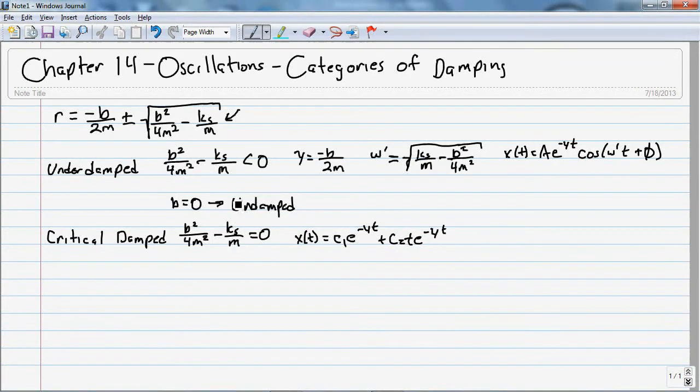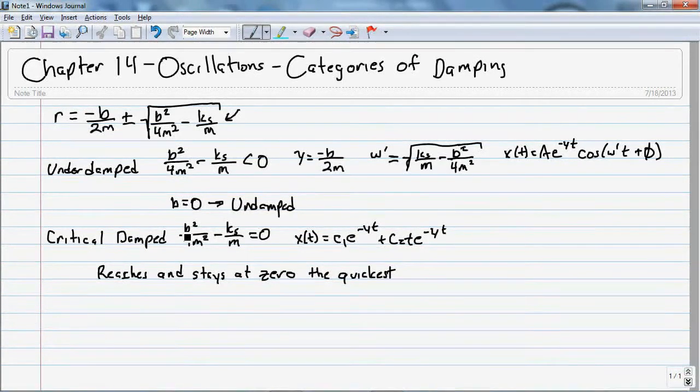Now, while this undamped rings back and forth, critically damped reaches and stays at 0 the quickest. That's what critically damped tells us. It gets to 0 the fastest of all the different functions.